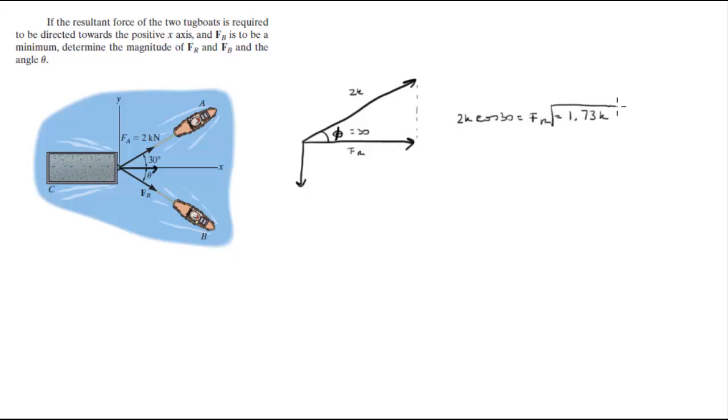This angle is obviously 90 degrees. And if you have to find this force, all you have to do is 2k sine of 30 degrees, which will be equal to 1k.